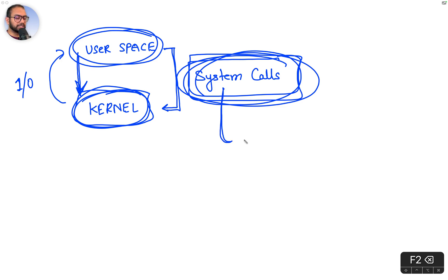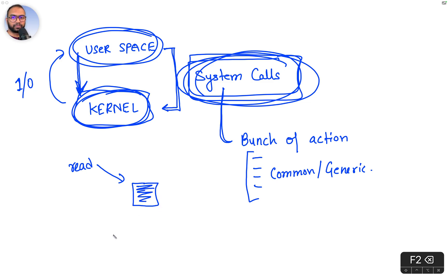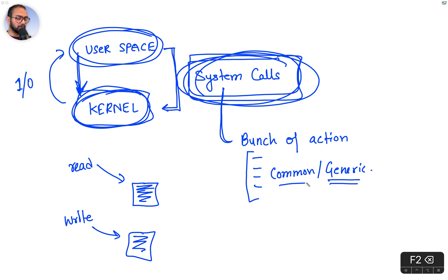System calls are essentially a bunch of actions that over the years developers and the Linux kernel maintenance community have realized are common or generic. For example, we would want to perform a read on a camera buffer, or a write operation on a display buffer. Read and write are such generic operations that we would want to perform on different hardware — so the system calls are those.